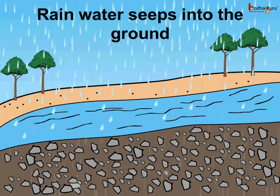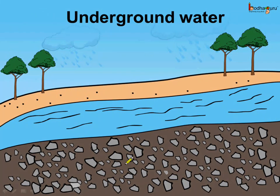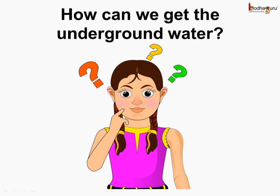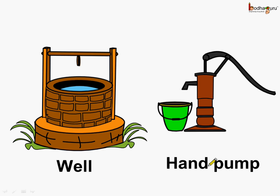Some of the rain water also seeps into the ground. So there is some water found underground and we call it underground water. Can we get underground water for our use? Yes we can. We dig wells, that is deep holes underground, to get underground water. Also hand pumps are used to get underground water.